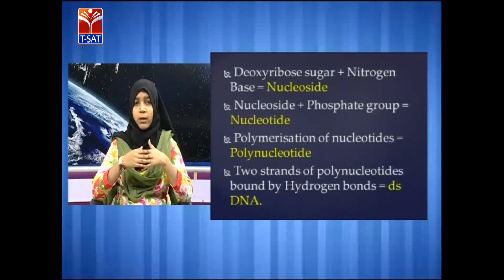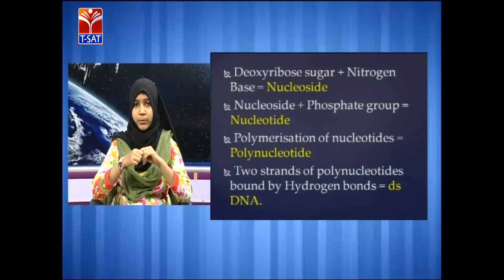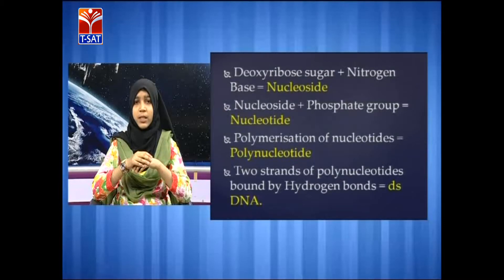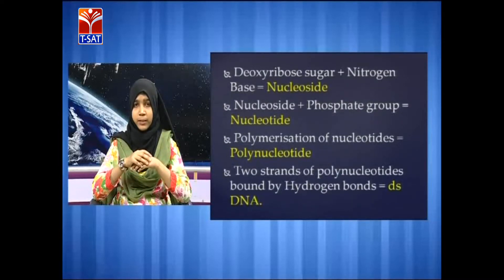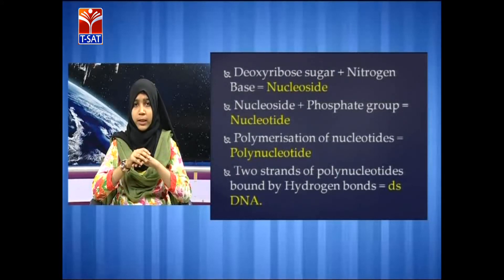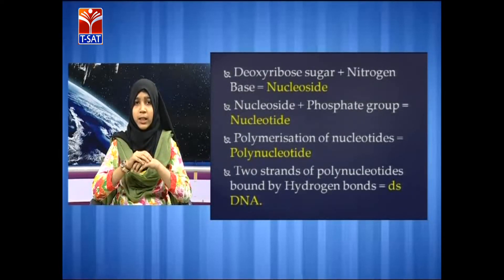Now I will tell you about how a double-stranded DNA molecule is formed. When deoxyribose sugar is combined with a nitrogen base, it forms a nucleoside. A nucleoside combined with a phosphate group forms a nucleotide. Polymerization of nucleotides gives us a polynucleotide. When two strands of polynucleotide are bound by hydrogen bonds, we get double-stranded DNA.